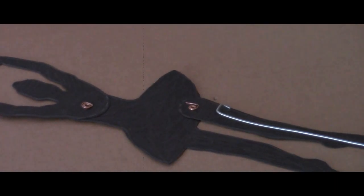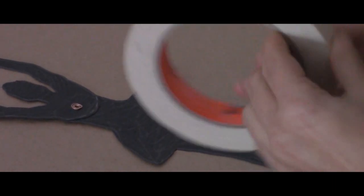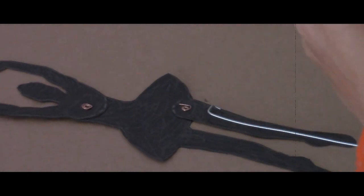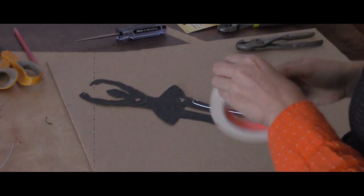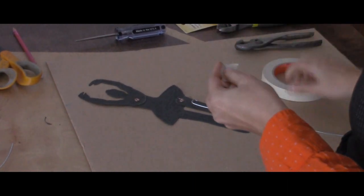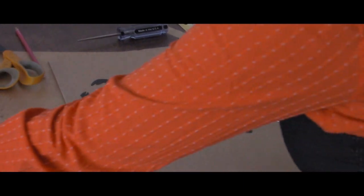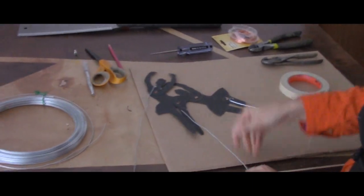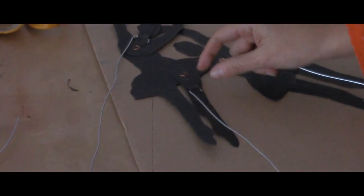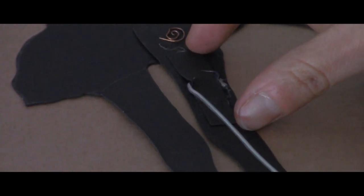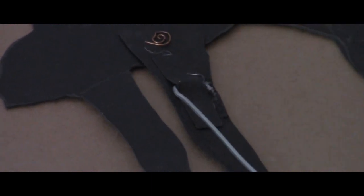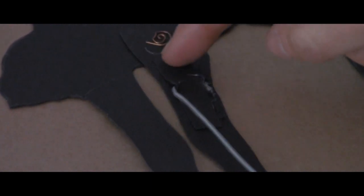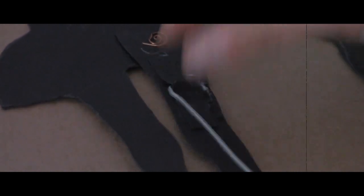We're going to be using masking tape to make the connection temporarily so we can test out our puppet and see if it really moves the way we want. But, in the end, you might want to use something stronger. For example, here, we've taken a piece of the same cardstock, cut out a strip that fits, and used either hot glue or Yes Paste or any other kind of adhesive to form a stronger bond.